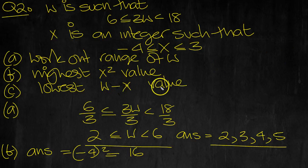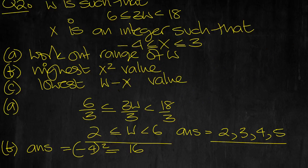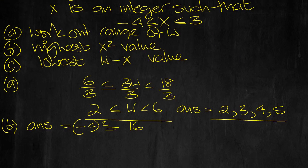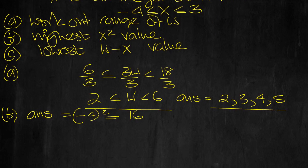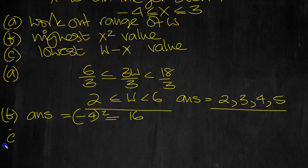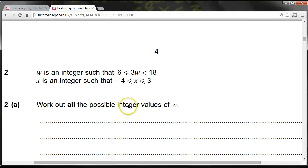And then c, the lowest w minus x value. OK, w minus x value. Let's see. w minus x value. So was it the biggest? OK, let's look at it. Is it the biggest we want?